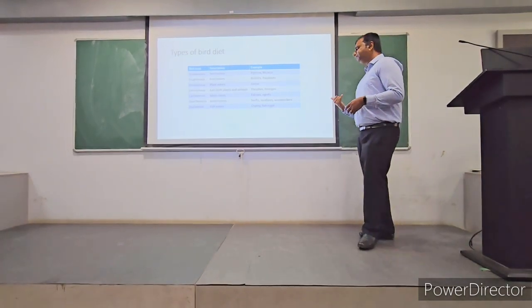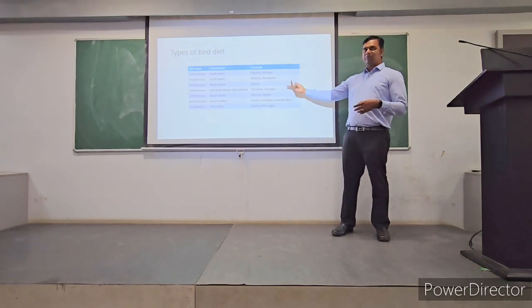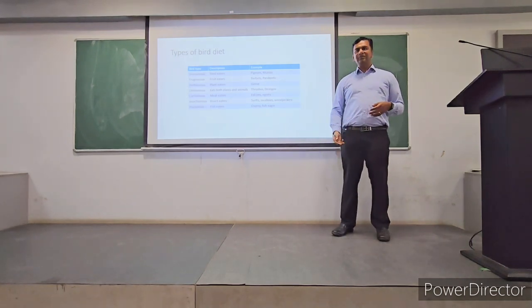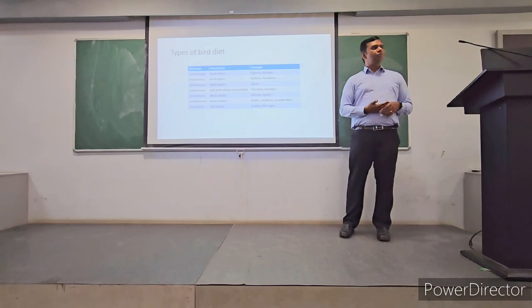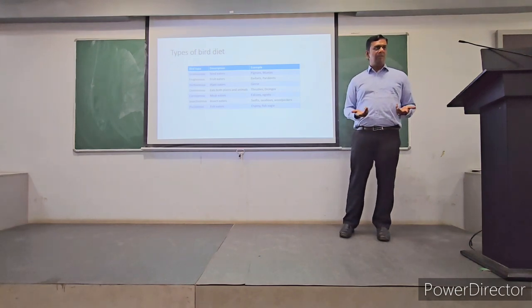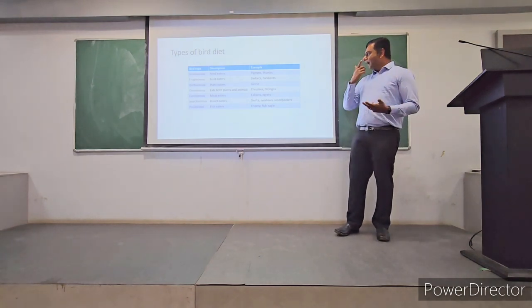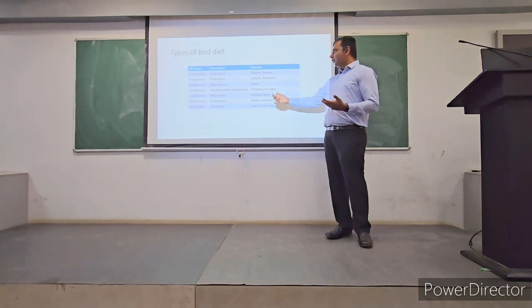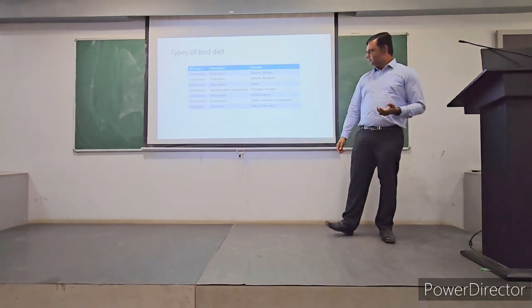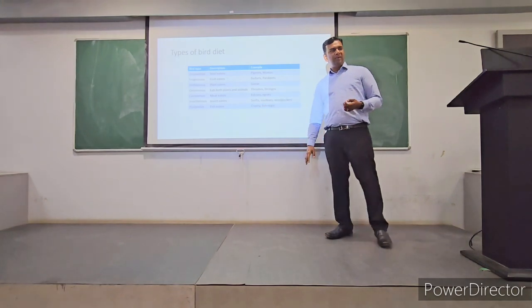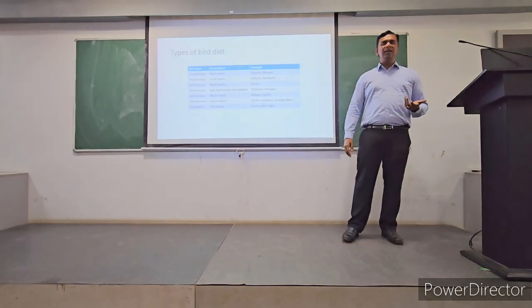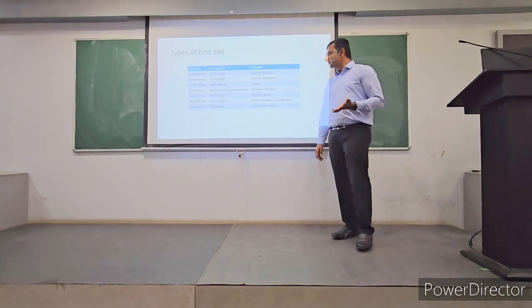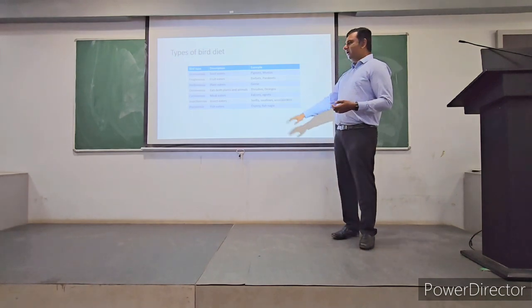Omnivorous, like for example crows. Crows are omnivorous, they eat anything. Whatever they get, they eat. So thrushes, thrombos, they eat both plants and animals. Carnivorous are typically like your eagles, falcons, kites, vultures - they're all meat eaters.